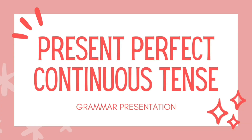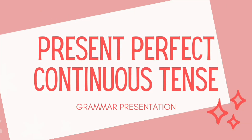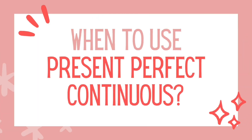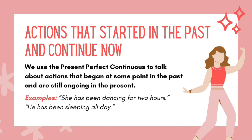In this video, we will learn about present perfect continuous tense. When to use present perfect continuous tense? Number 1: Actions that started in the past and continue now. We use present perfect continuous to talk about actions that began at some point in the past and are still ongoing in the present.